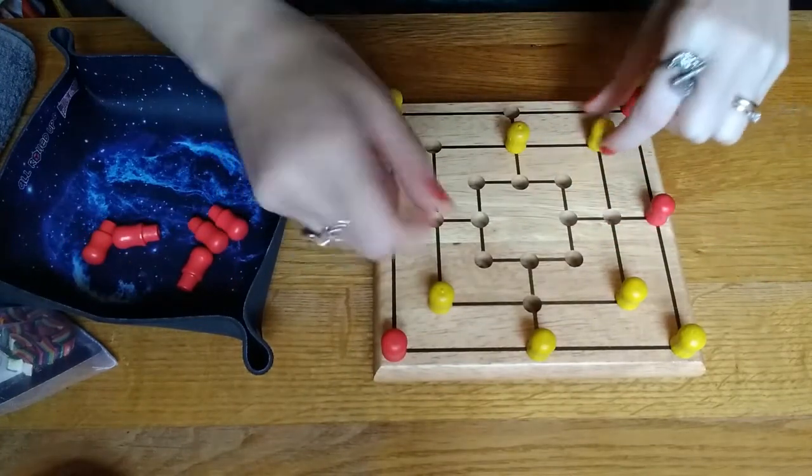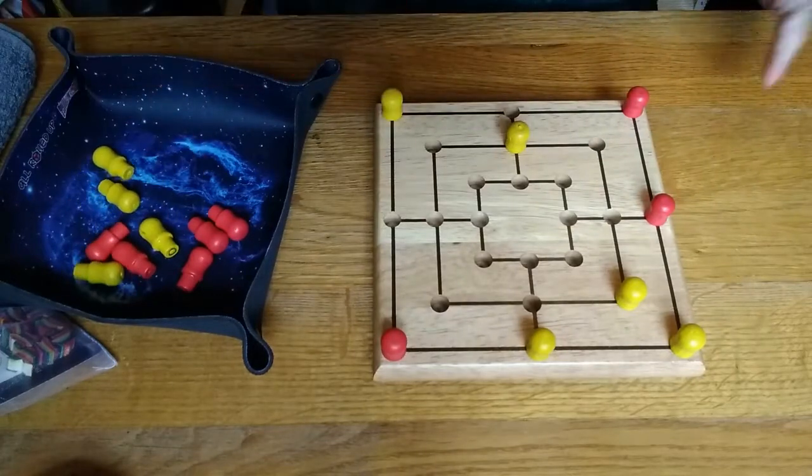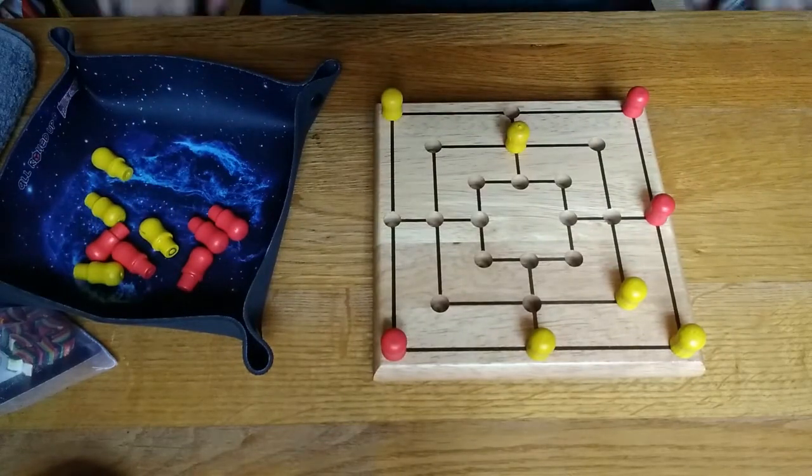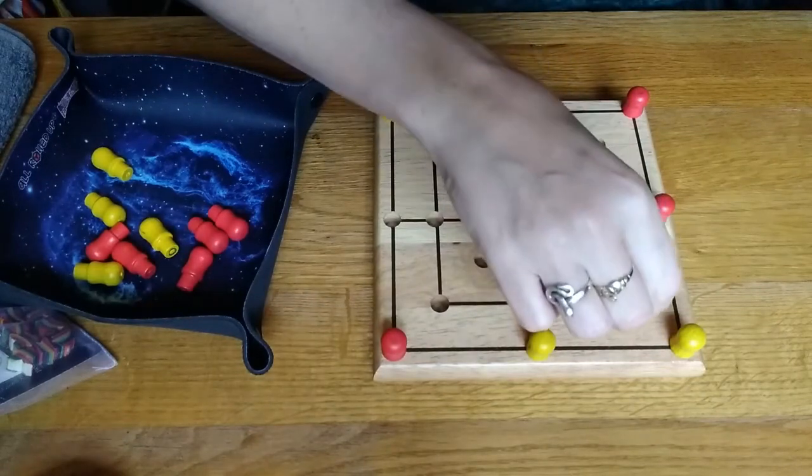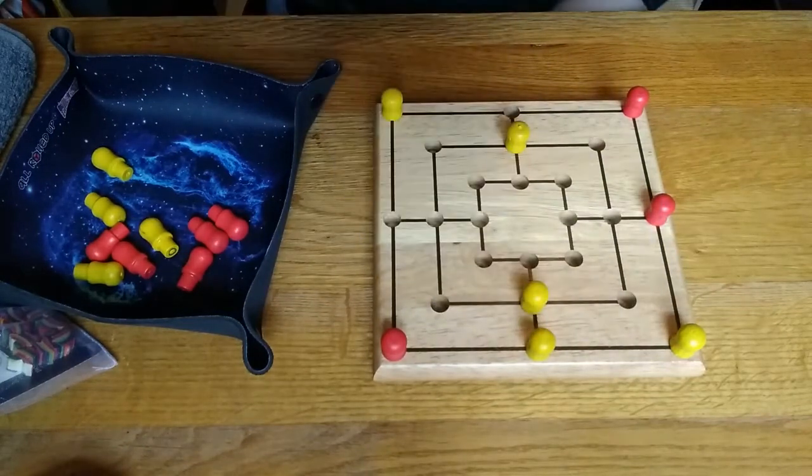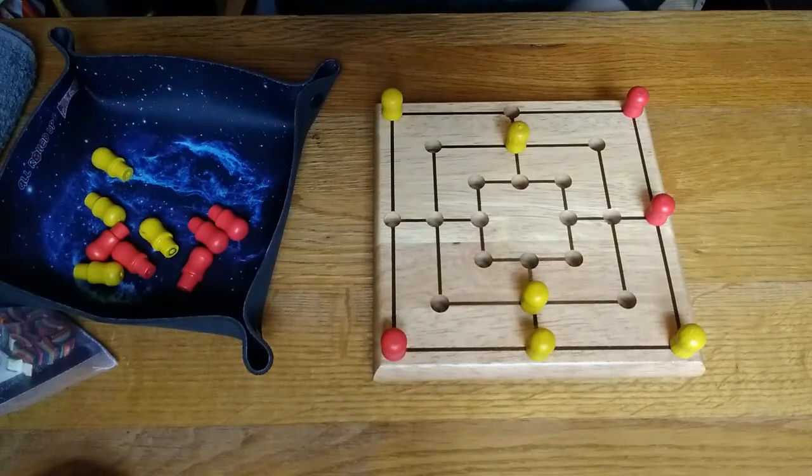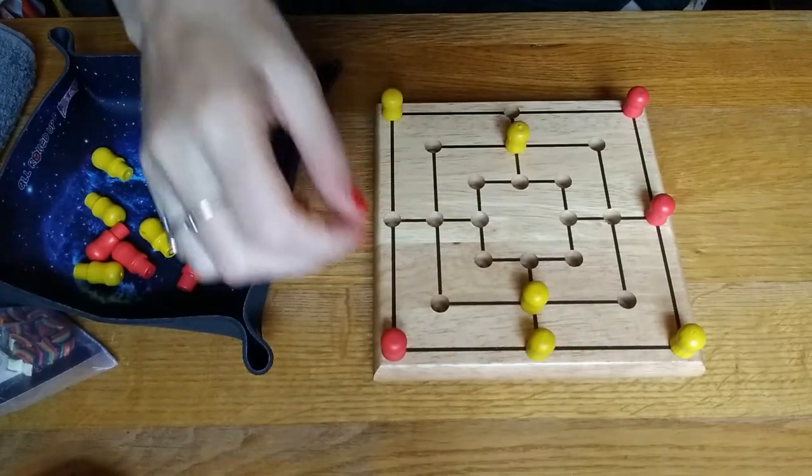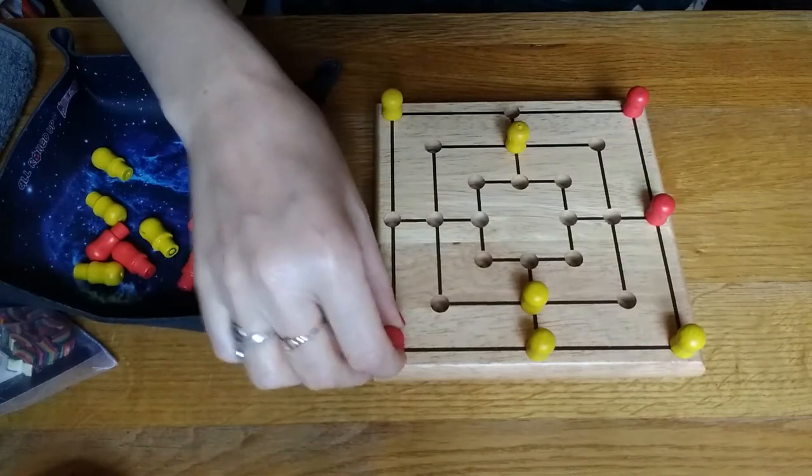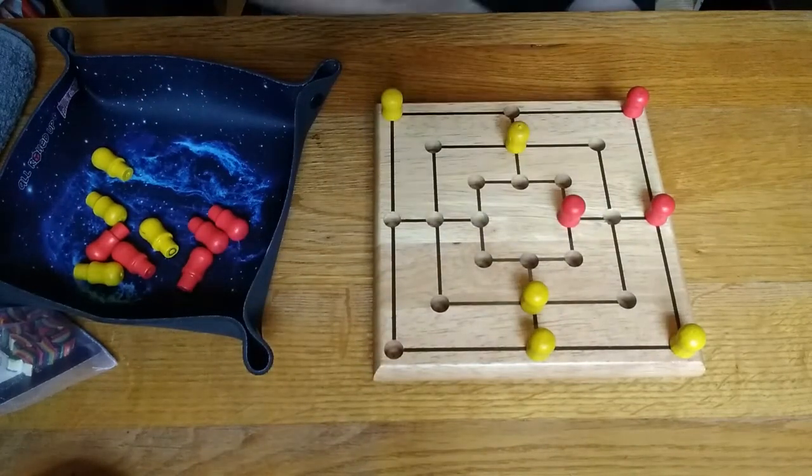And we'll take some yellows out because we'll say that red was catching up a little bit. So the yellows are quite spread out. The yellows are going to try and move across here. Red now can do something called flying because they've only got three pieces left. What they can do is they can move to any space on the board.